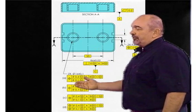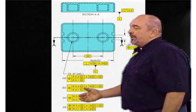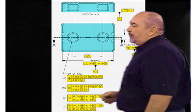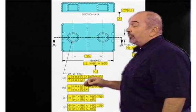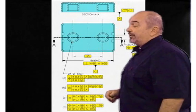The first three are composite. Notice there's only one position symbol. The last one is two single segments. In all four cases, the upper segment is locating the two holes within .4 relative to the datum reference frame.